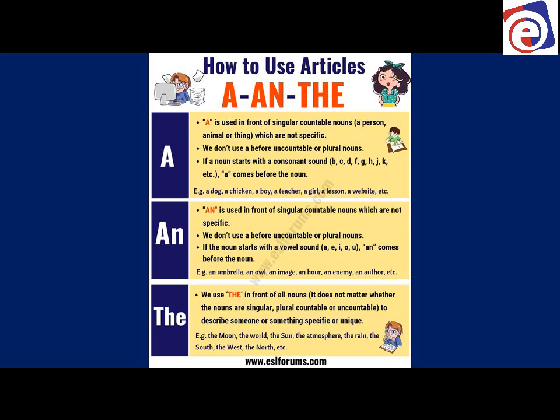You need to know the countable and uncountable nouns because it does affect whether we use the article before them or not. We don't use 'a' before uncountable or plural nouns. If a noun starts with a consonant — b, c, d, f, etc. — 'a' comes before the noun: a dog, a chicken, a boy, a teacher, a girl, a lesson, a website. It means general — one countable noun — and we're speaking generally, not specific.